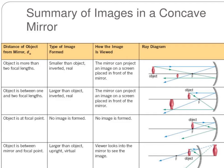Summary of the images in a concave mirror. First one is when the object is placed beyond C. Then the image will be formed smaller than object, inverted, and real.